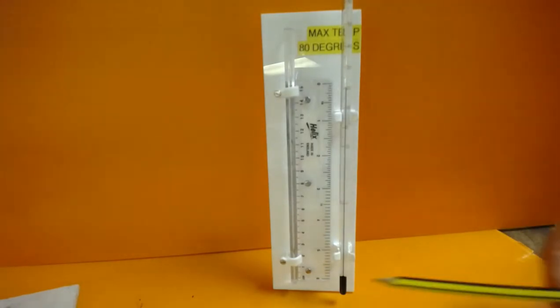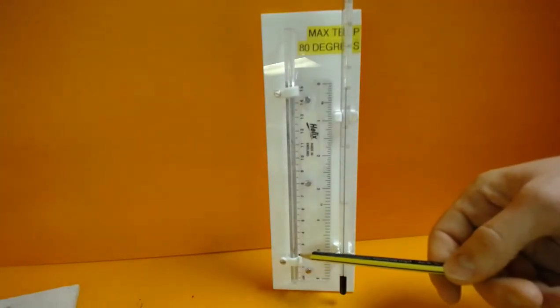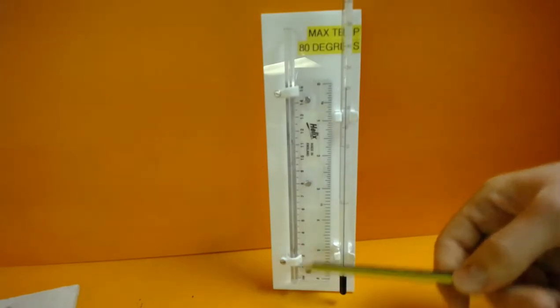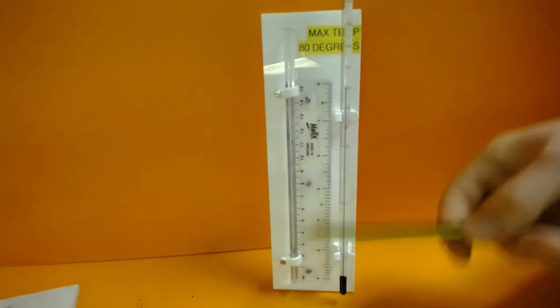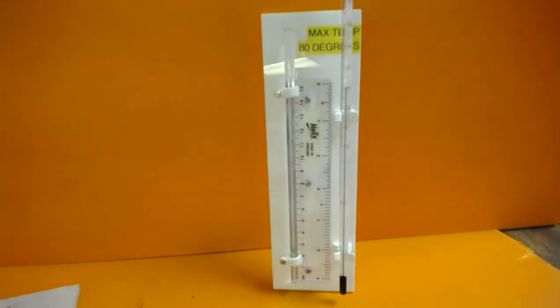It might be hard to see on camera but the little plug is here. So whenever the gas underneath it expands this rises up and we can measure using our ruler scale the degree to which it expands.